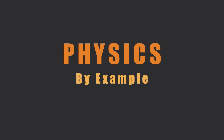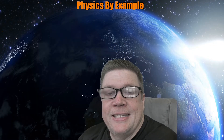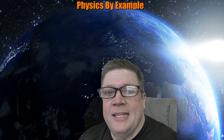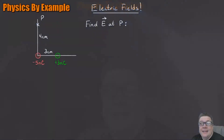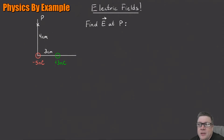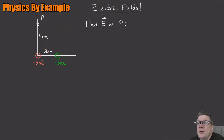Let's dive right in to see how we find the electric field from a point particle — in this case, two of them. I've got two point charges: one is minus five nanocoulombs, the other is plus three. A minus charge and a plus charge — for some reason I've decided minus charges are red and plus charges are green. What I want to do is find the electric field at point P due to these charges.